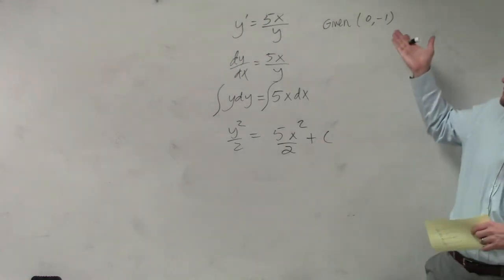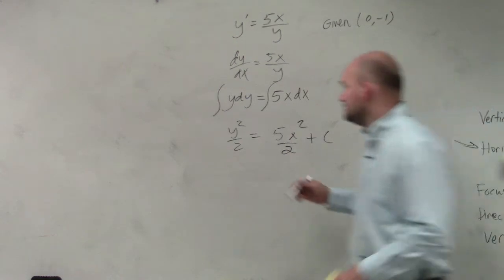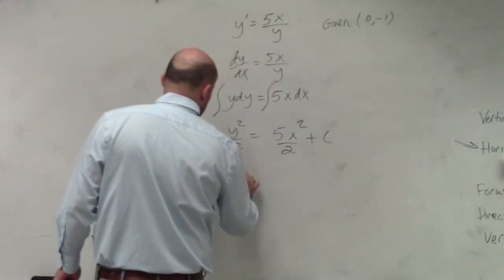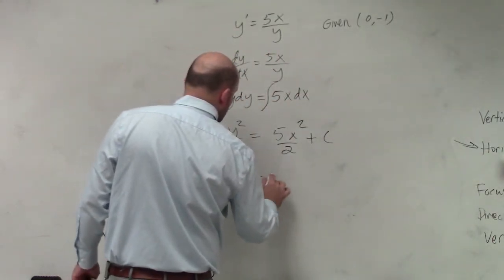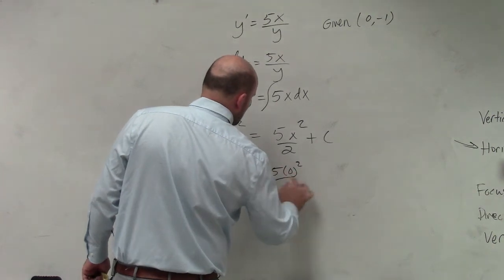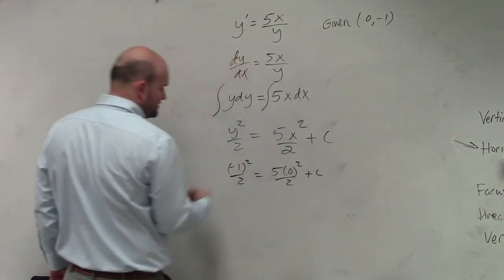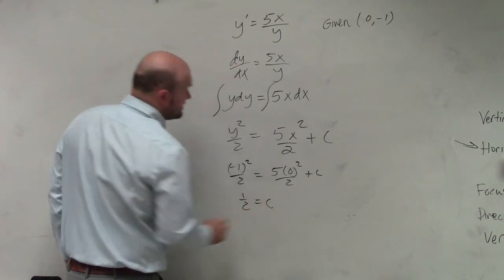Now, I have my value. I have a 0 and a negative 1. So let's do negative 1 squared over 2 equals 5 times 0 squared over 2 plus c. That goes to 0. And that equals 1 half equals c.